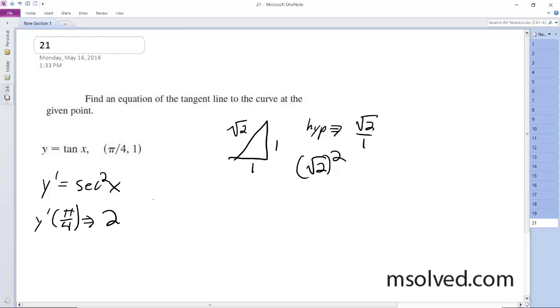So what we do is we plug in the point, so y minus 1. And then our point is equal to the slope, which is 2, and then x minus pi over 4. Our point-slope form.